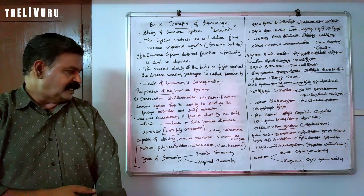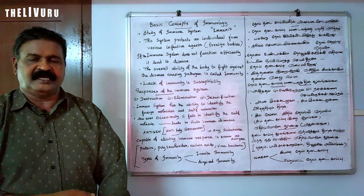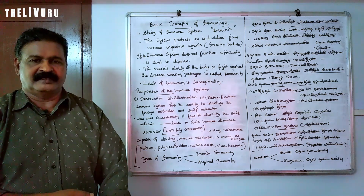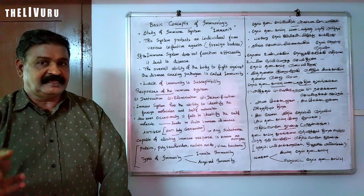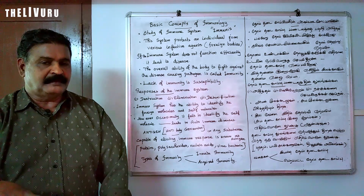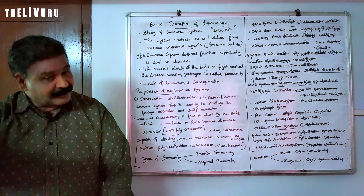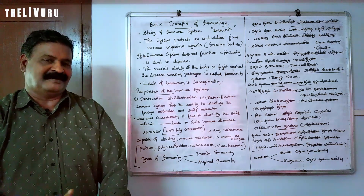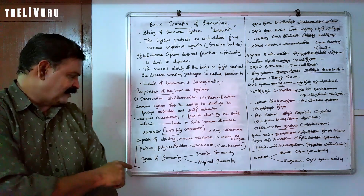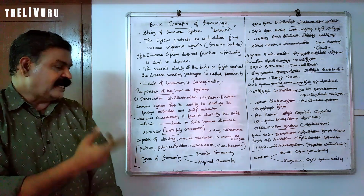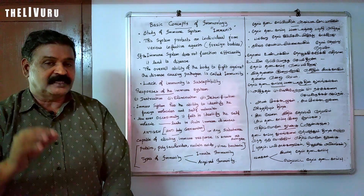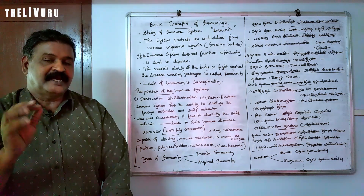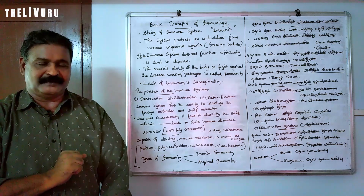That is innate immunity — the immunity we are born with. Acquired immunity, on the other hand, is immunity that is developed during the lifetime of the individual.